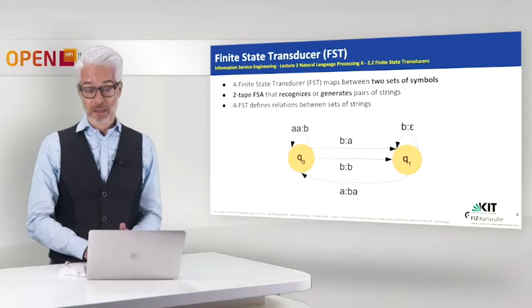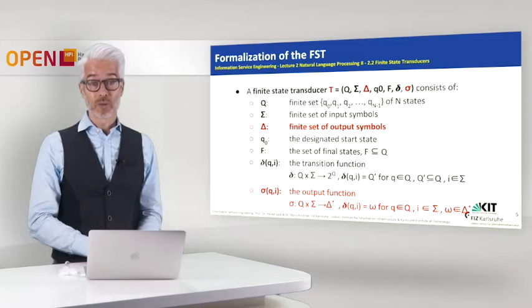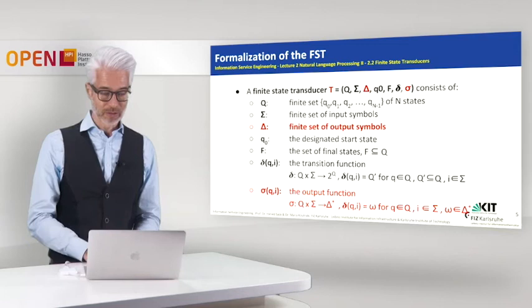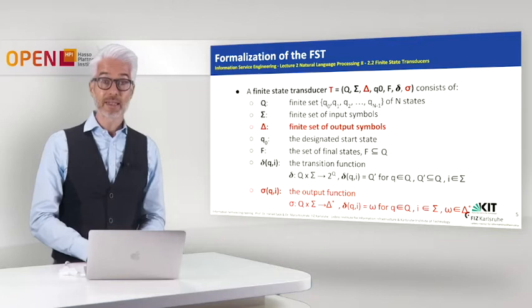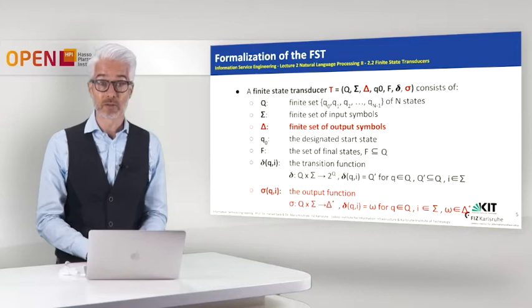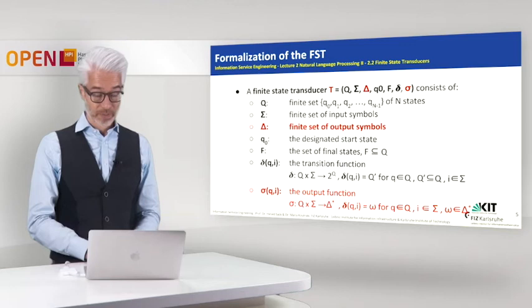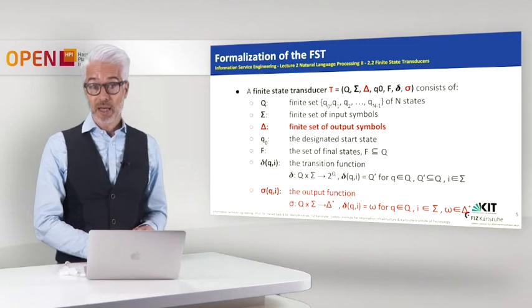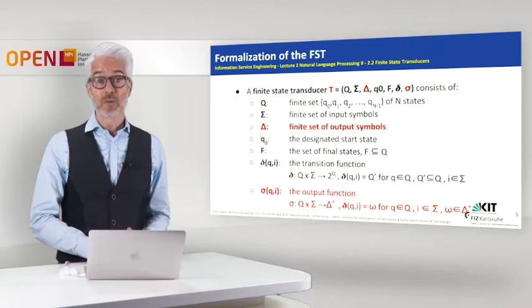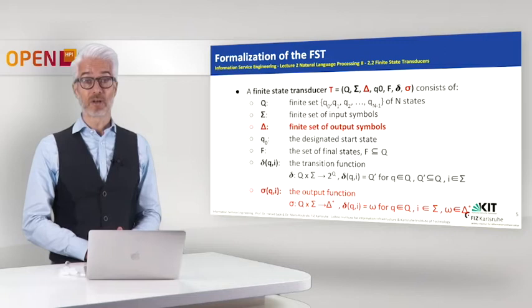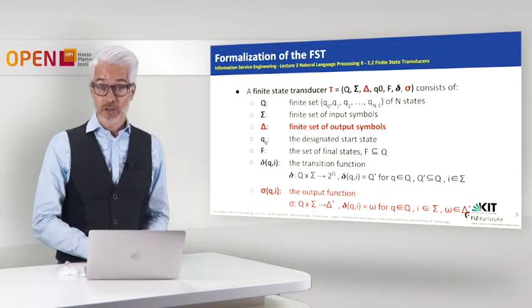Let's have a look at the formal definition of this FST before we go into the application. The application will be much easier, so don't get confused about this complicated formal definition. We extend our already existing definition by defining a finite state transducer T, which consists of an even larger tuple. The tuple consists of a finite set of states, the finite set of input symbols — all the same as before — but now we also have a set of output symbols, capital delta. Then we have the designated initial state Q sub 0, the set of final states F, and the transition function delta.